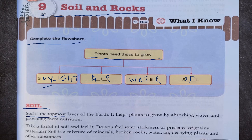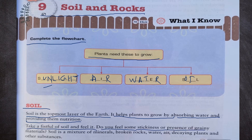So what is soil? Soil is the topmost layer of the earth. It helps plants to grow by absorbing water and providing them nutrition. If you take a fistful of soil and feel it, you may feel some stickiness or grainy materials. Soil is a mixture of minerals, broken rocks, water, air, decaying plants, and other substances.